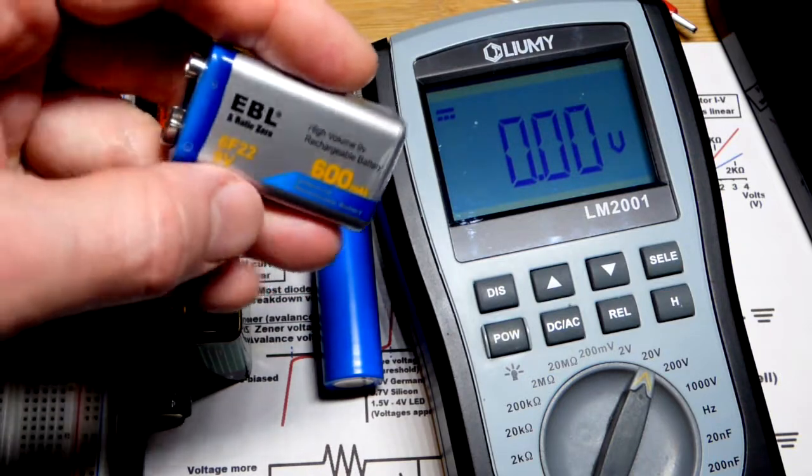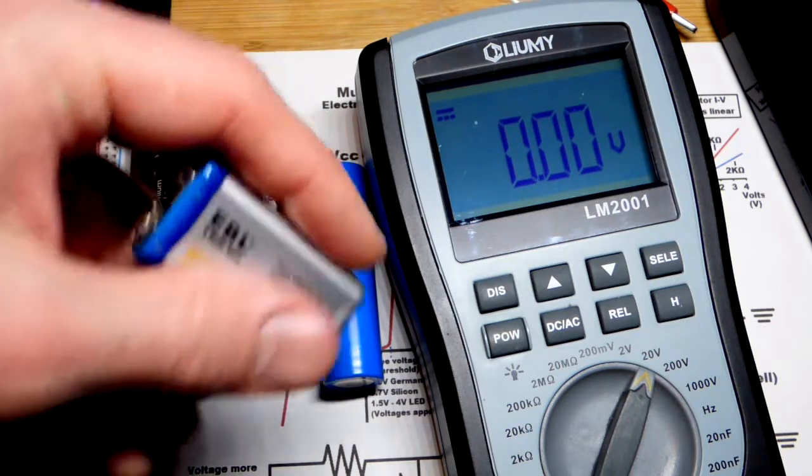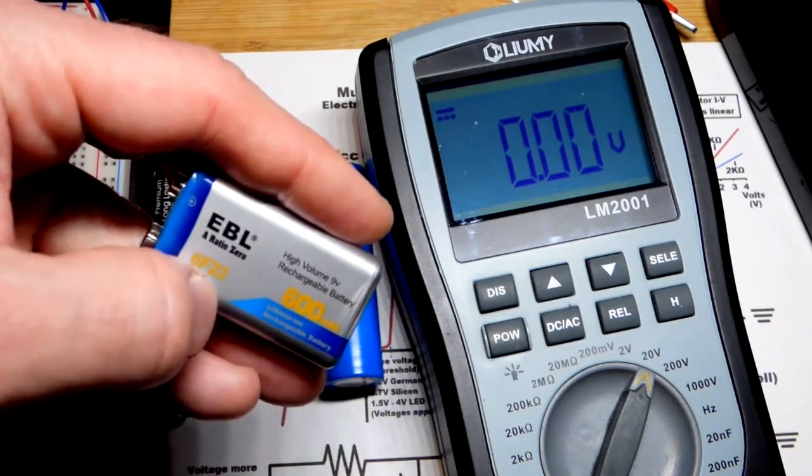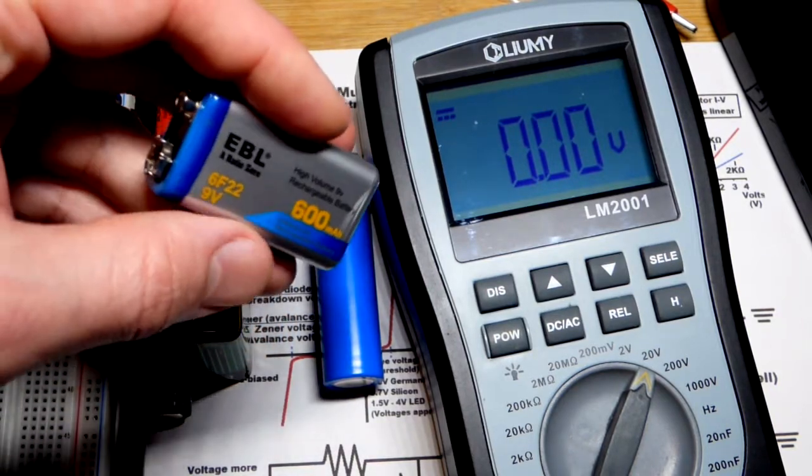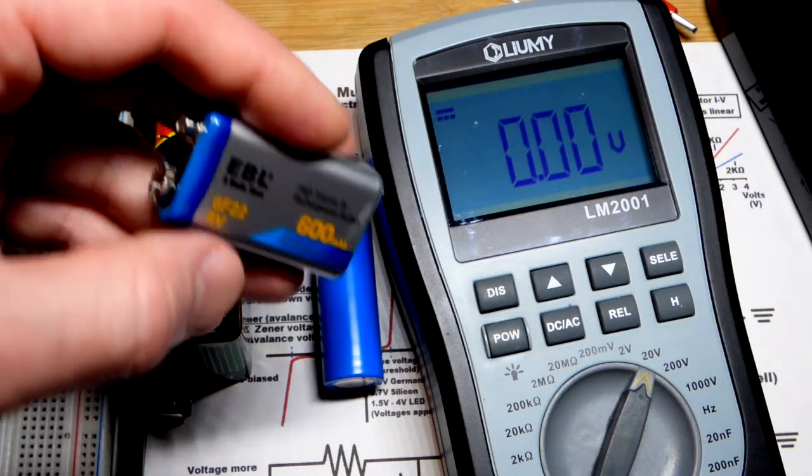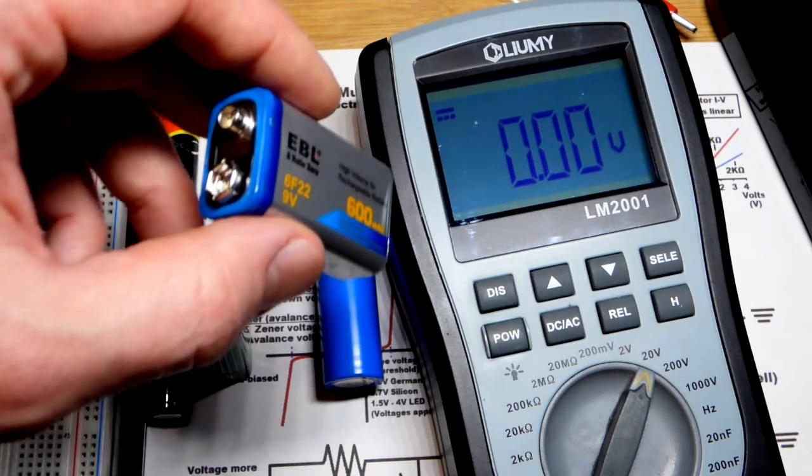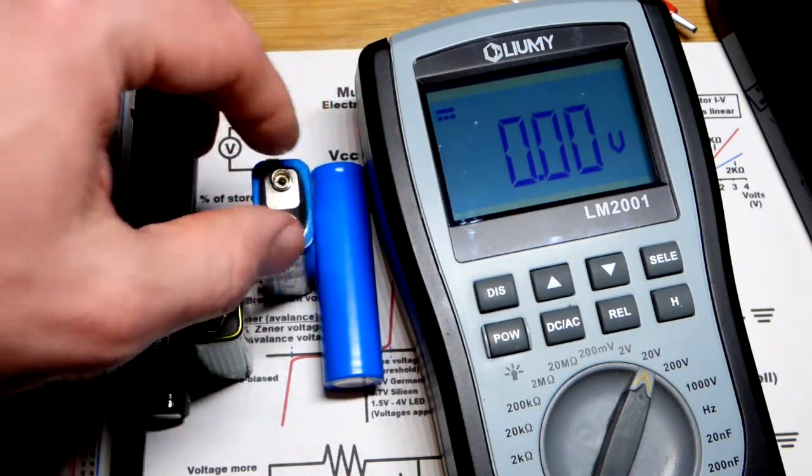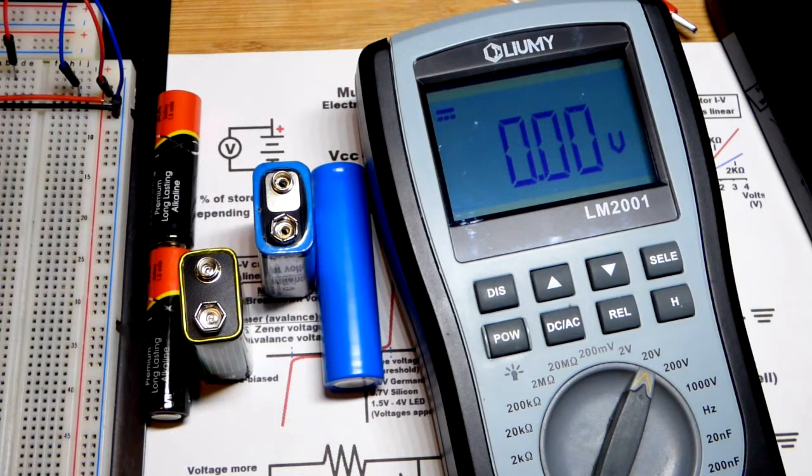This one is basically two 4.2 volt batteries, not as big though, just the chemistry in series. You can fully charge to 8.4 volts, and then when each of those cells drops to about 3 volts, so 6 volts total because they're in series, you want to recharge these so called 9 volt batteries even though you really get about 8.4 volts out of them when they're fully charged.